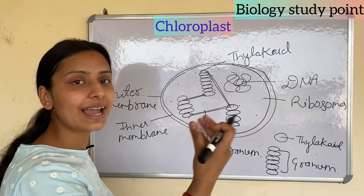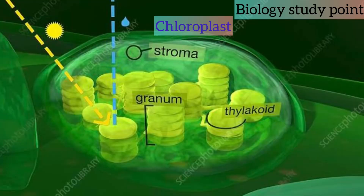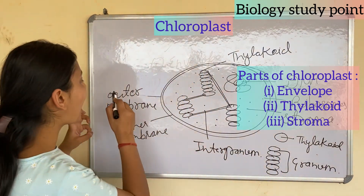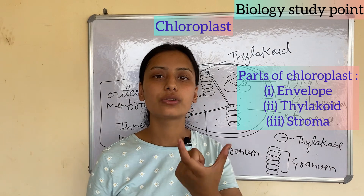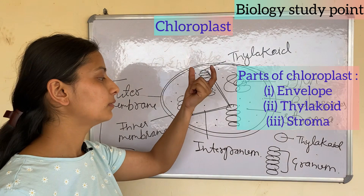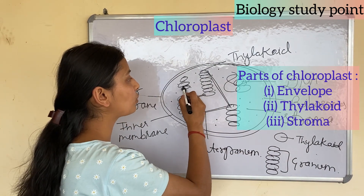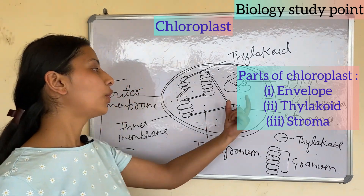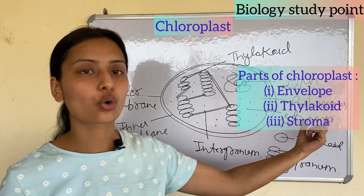This completes the whole chloroplast structure. There are also protein particles inside. The fluid-filled blank space containing all the fluid parts of the chloroplast is called stroma. The three main parts are: first, the envelope (outer and inner membranes); second, the thylakoid; and third, the stroma.